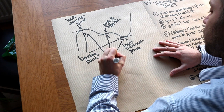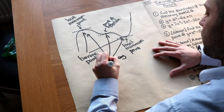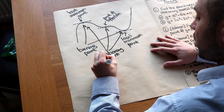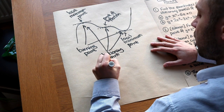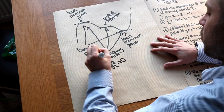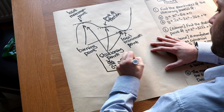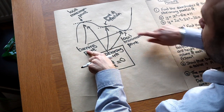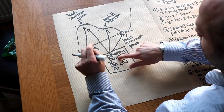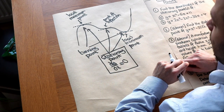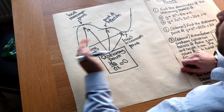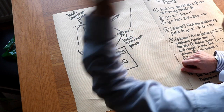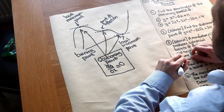A stationary point is where the gradient, i.e. dy/dx, is equal to zero. That's the definition of a stationary point. A turning point is a special kind of stationary point where it's either a maximum or minimum, where the graph is turning around — hence turning point.